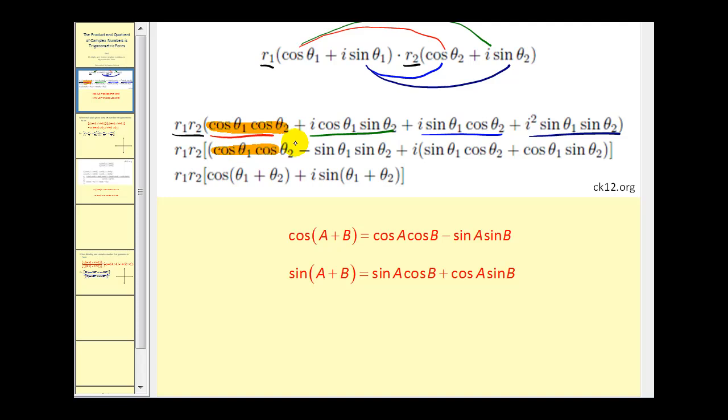Next, this term stays the same. i² is equal to negative one, so this term is the same as minus sine θ₁ sine θ₂. These two terms have a common factor of i, so if we factor out i from these two terms, we would have i times the sum here. Now what we'll notice is that this difference can be used with the cosine sum identity to get cosine of θ₁ plus θ₂. And this sum, using the sum identity for sine, can be simplified to sine θ₁ plus θ₂.